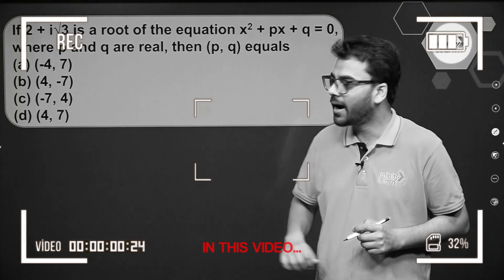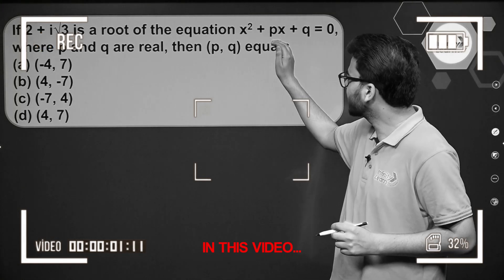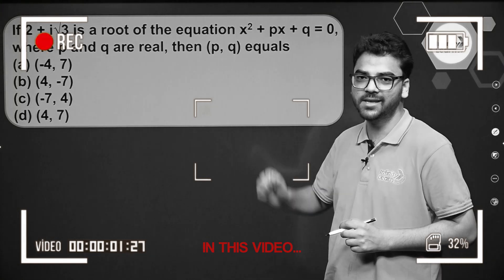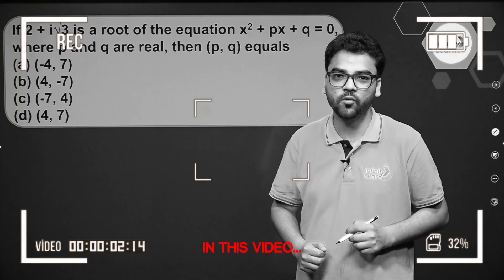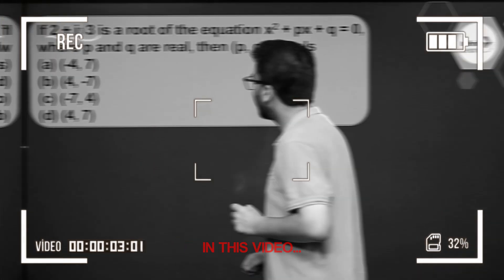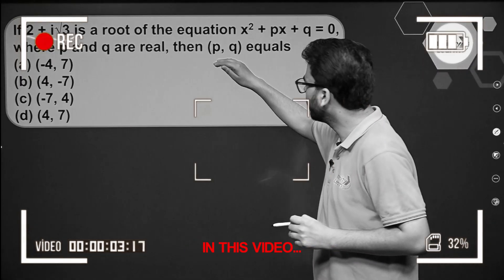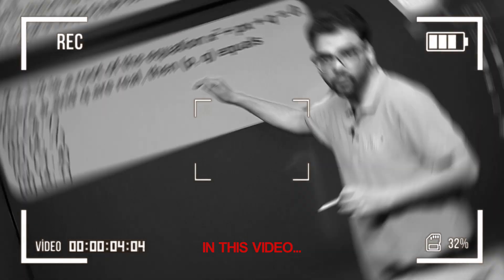We have a quadratic equation x² + px + q = 0, and we have to find the value of p and q.